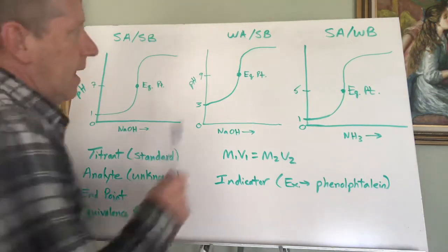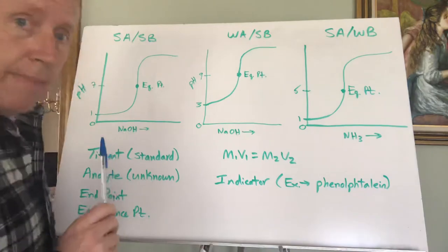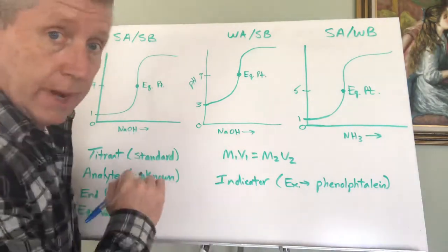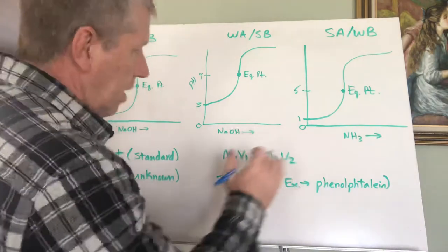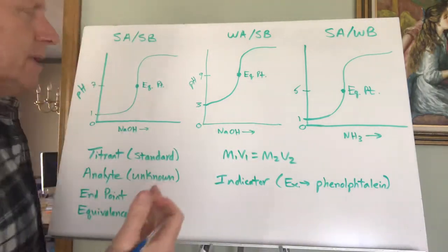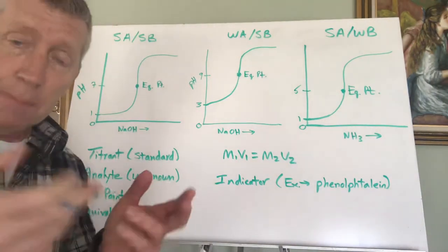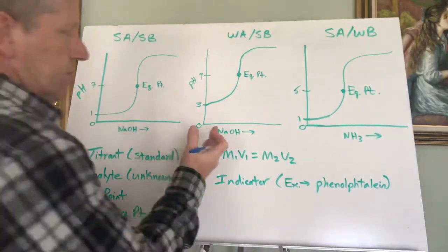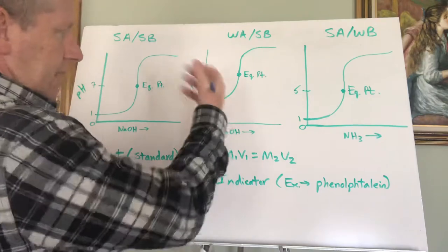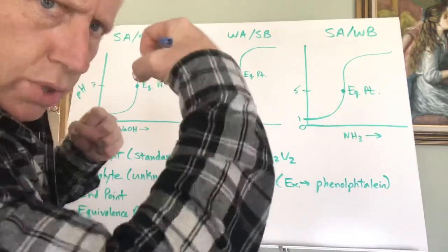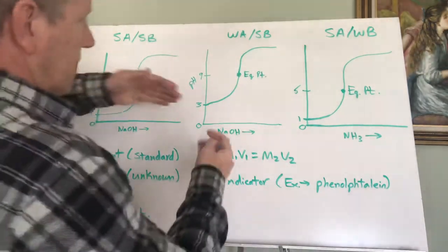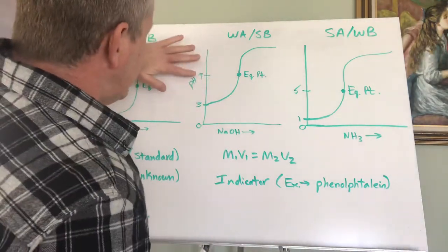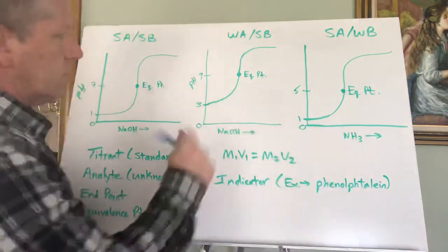What happens if you have a weak acid and you're adding a strong base like NaOH? The strong base is going to dominate, and the equivalence point will be at a pH of around 9 — above 7. The curve starts at a higher pH than a strong acid, around pH 3 or 4, because it's a weak acid. Acetic acid, for example, might start at around pH 4.